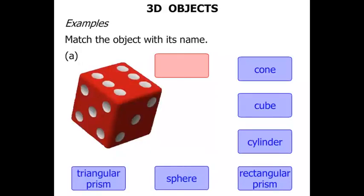So what do you think this is? It's got all square faces. There are six of them. This is in fact a cube.